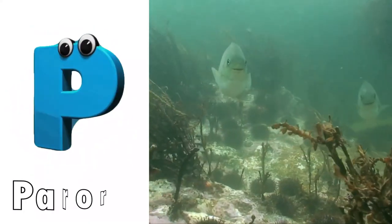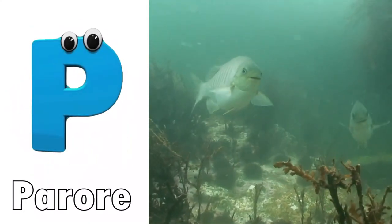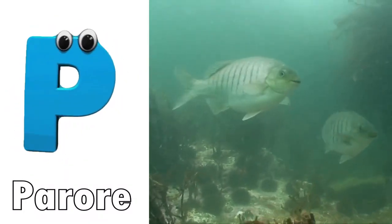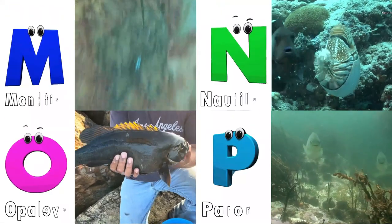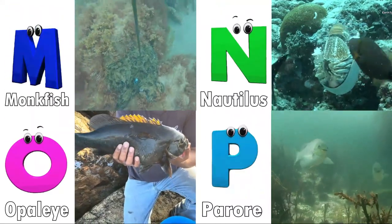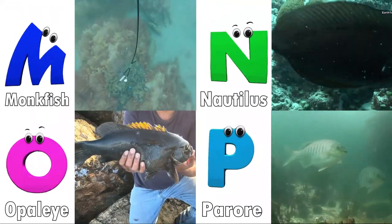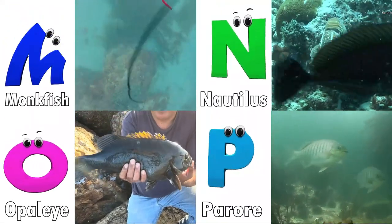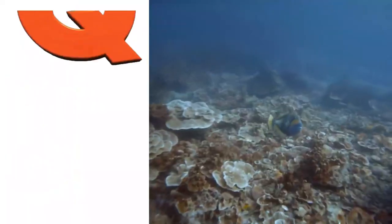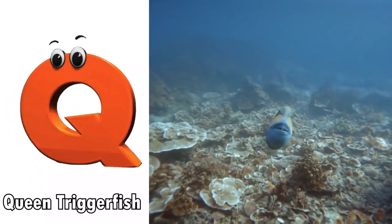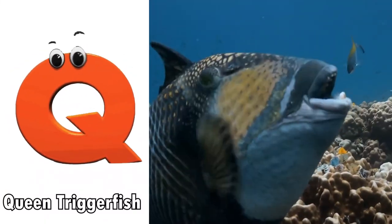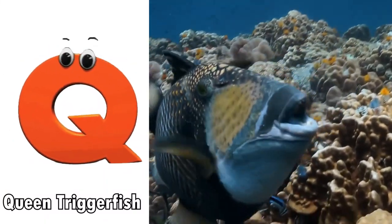P is for parrot fish. Q is for queen triggerfish.